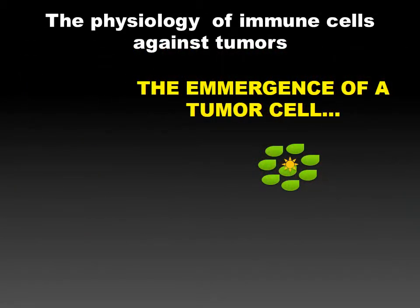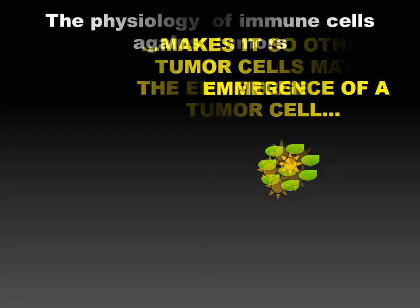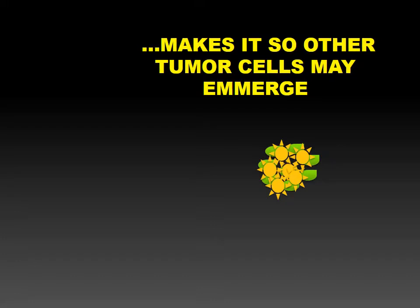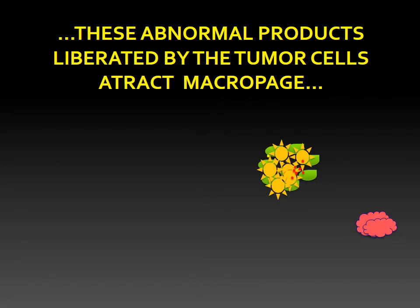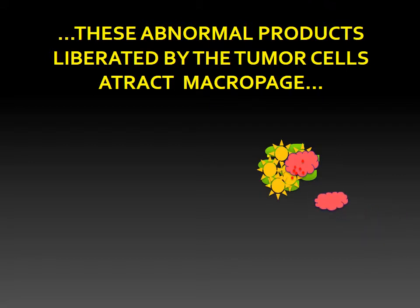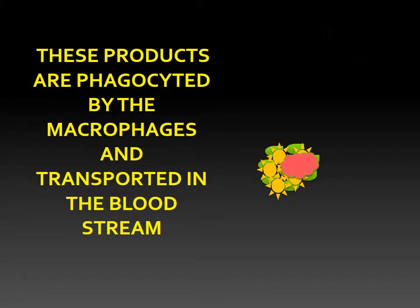The physiology of immune cells against tumors: the emergence of a tumor cell makes it so other tumor cells may emerge. These abnormal products liberated by the tumor cells attract macrophages, which phagocytize these products and transport them in the bloodstream.